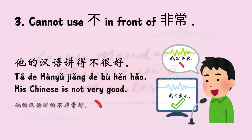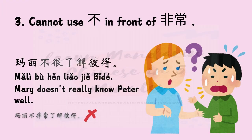Number three: you cannot use 不 in front of 非常. For example, 他的汉语讲得不很好 is acceptable, but you cannot say 他的汉语讲得不非常好 — that is wrong. Likewise, 玛丽不很了解Peter — Mary doesn't really know Peter well. You cannot say 玛丽不非常了解Peter. However, you can say 玛丽非常不了解Peter, but note that the nuance is different: 玛丽非常不了解Peter means Mary really does not know Peter at all.